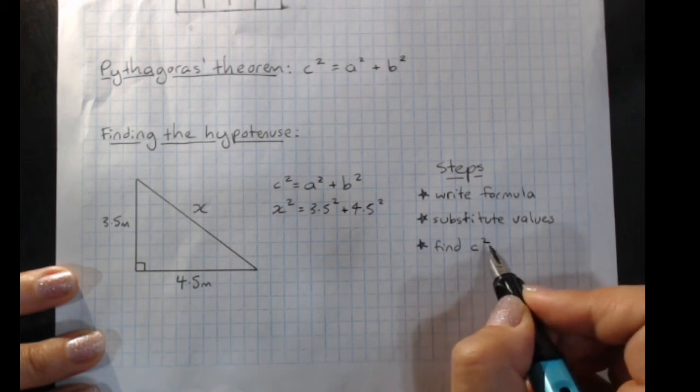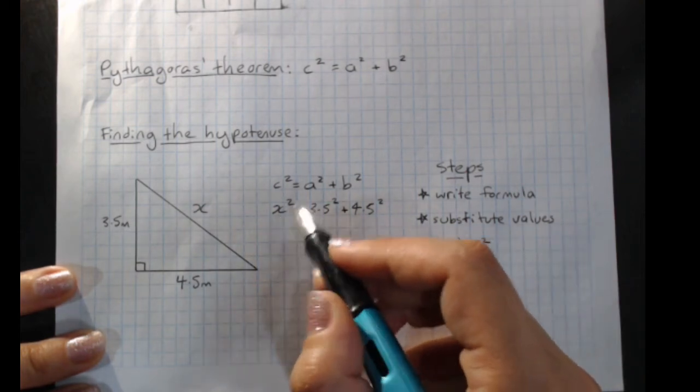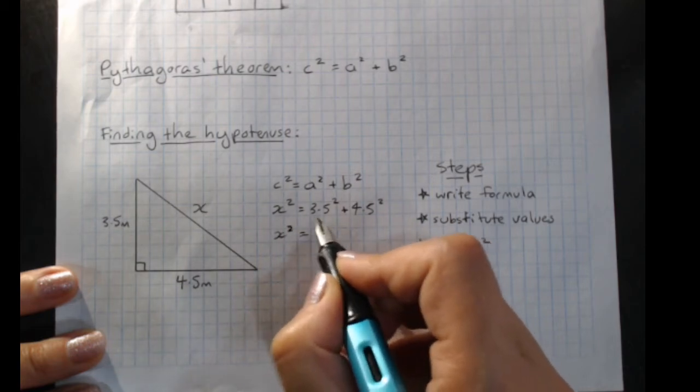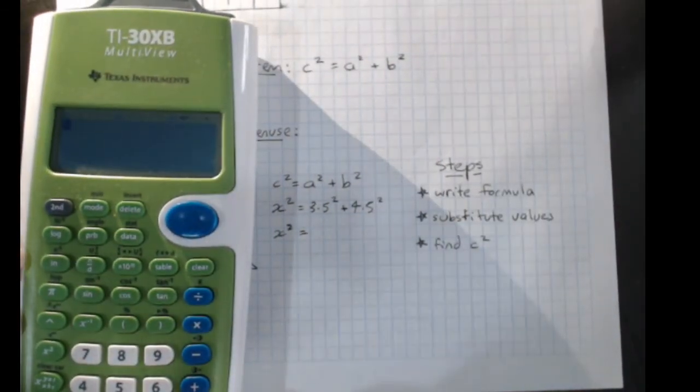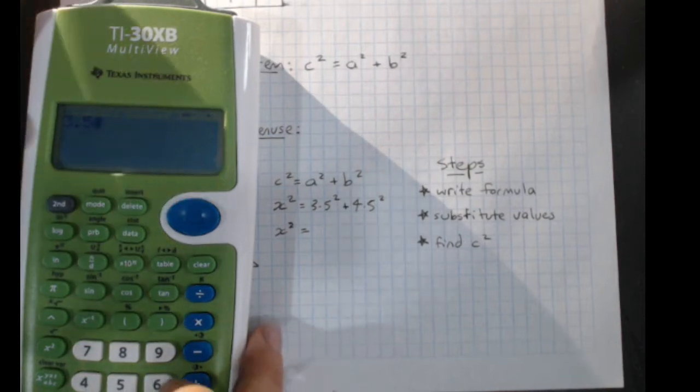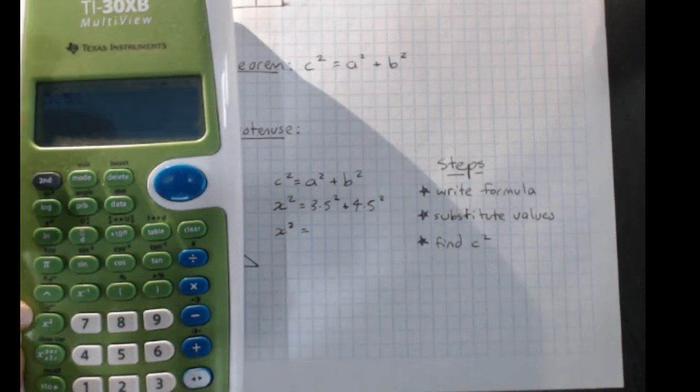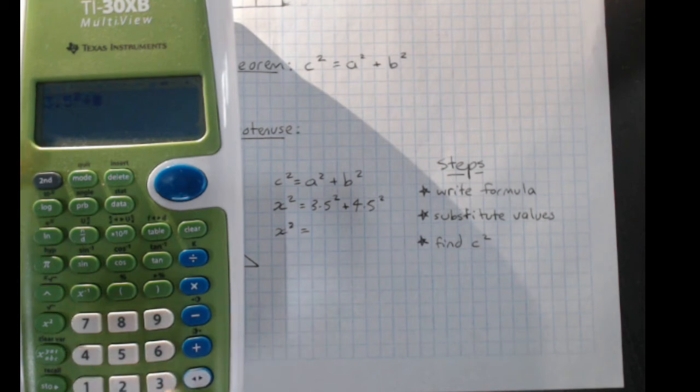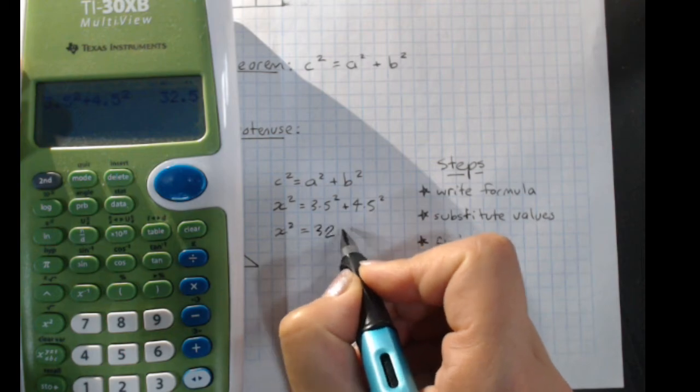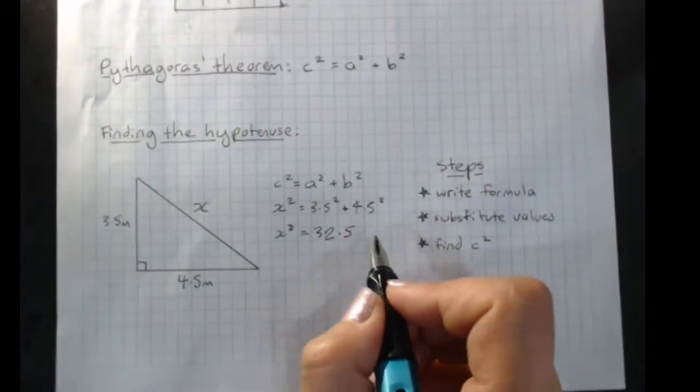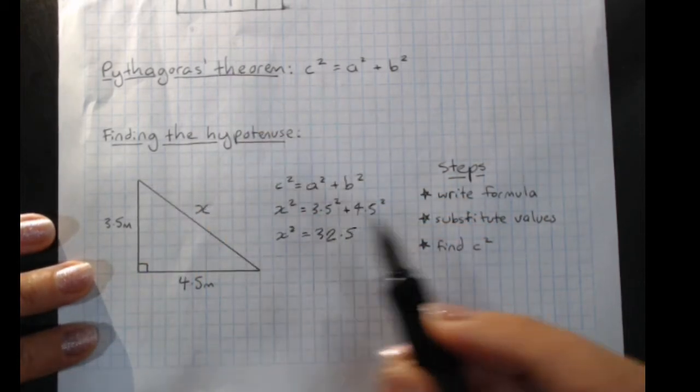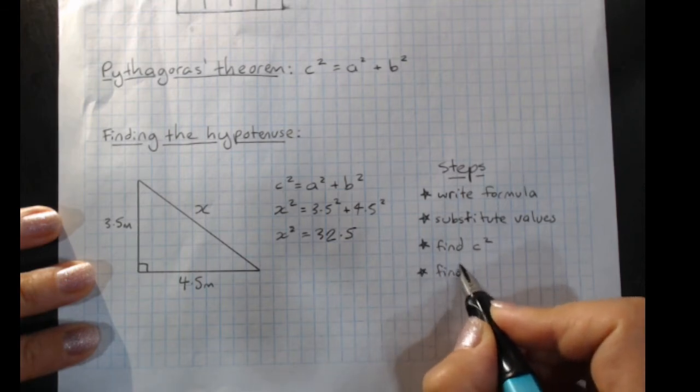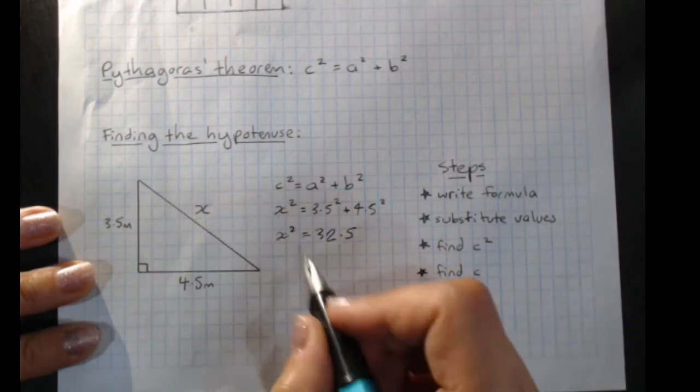So our next step is to find c squared, the hypotenuse squared, which here is x squared. So we keep going and we work out this. And you'll need a calculator for that. 3.5, here's the squared button. 3.5 squared plus 4.5 squared. And that's 32.5. But that is x or c squared. That's the area of the square here. We just want the hypotenuse.